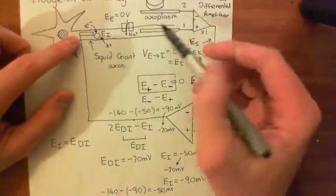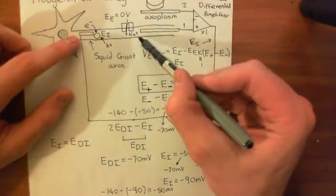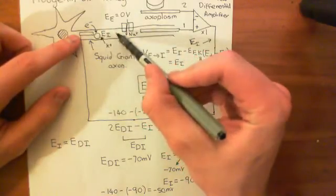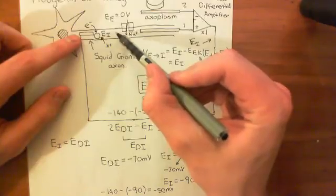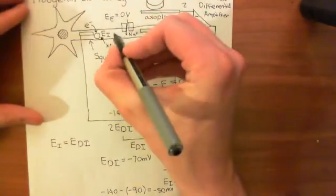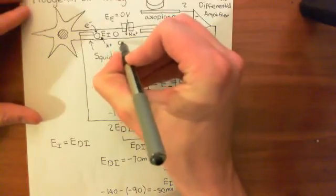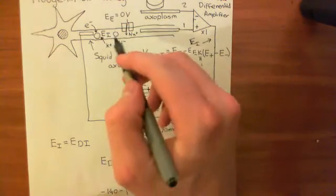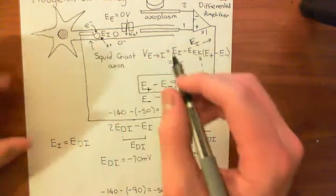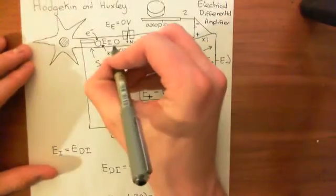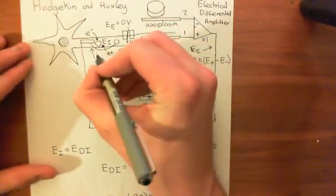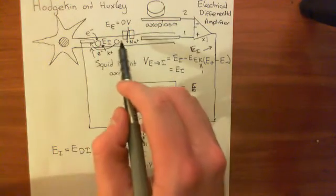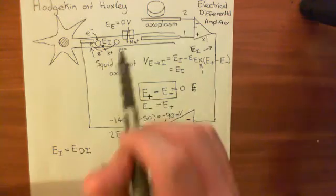We know that the electrical potential of the axoplasm is negative 90 millivolts, so this one is substantially more positive than this one. What's going to happen is that the negative ions within the axoplasm — for instance chloride anions — are going to migrate towards that electrode, and they're going to give up their electrons to the electrode. So it's going to work the opposite way. You're going to give up electrons to this electrode.